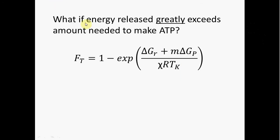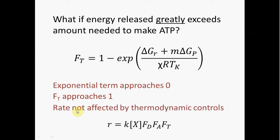So what if the energy released greatly exceeds the amount needed to make ATP? In that case, this exponential term approaches a value of zero, and as a result, the thermodynamic potential factor approaches a value of one. If that's the case, the rate is essentially not affected by thermodynamic controls. The rate that you get when you calculate when you multiply all these other factors together does not change when you multiply it by one. So that means that all these other factors are what determines the rate of the reaction, not the thermodynamic potential factor.